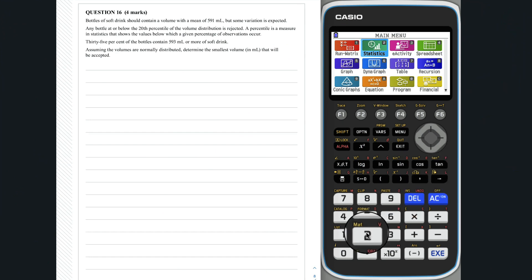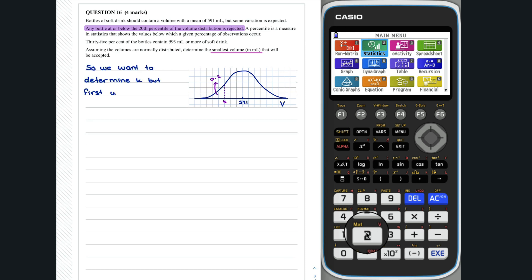Question 16, we want to determine the smallest volume in milliliters that will be accepted where bottles with a volume at or below the 20th percentile are rejected. We can draw a picture to represent this information. So, we want to determine K, but first we need to find the standard deviation of the volume of the bottles.